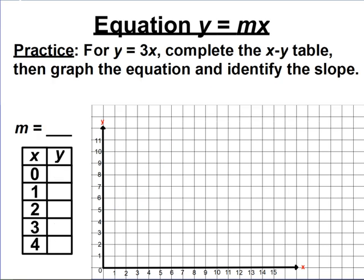I want you to try one on your own. The equation y equals 3x is in the practice example. Fill out your table of values with x from 0 through 4, figure out what y is, fill in the slope and m equals blank, and then graph your equation. See if you get a proportional line with a slope of 3, where the rise is 3 and the run is 1. Hit pause, try that, then check your answer. The slope is 3, the rise is 3 and run is 1 for each jump from point to point, confirming the slope matches m in the equation.